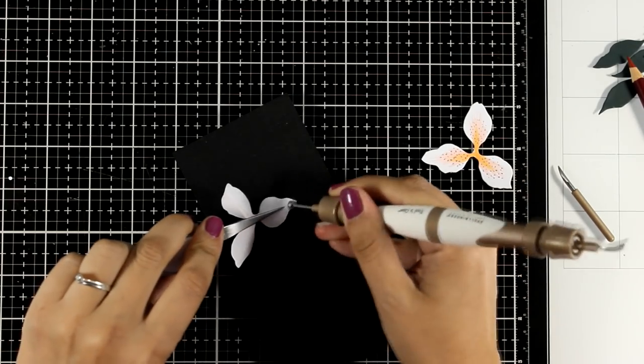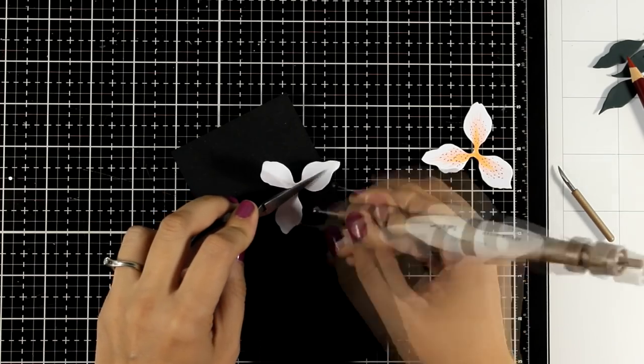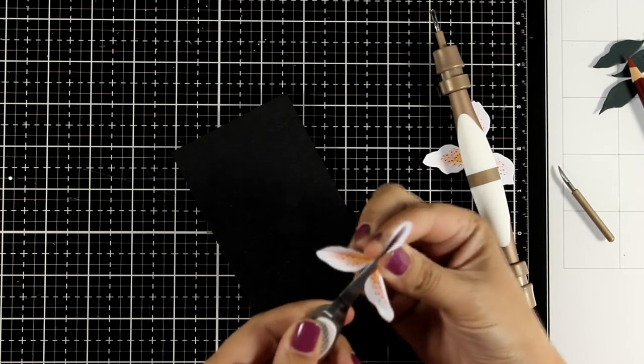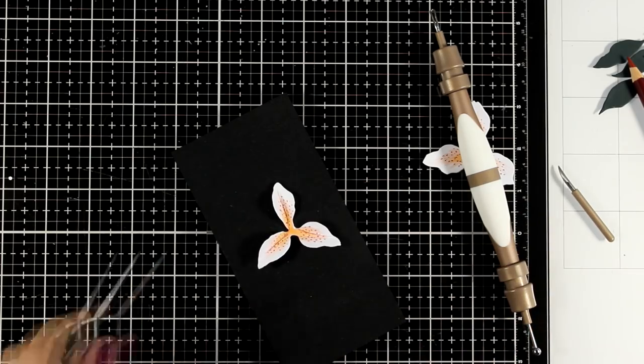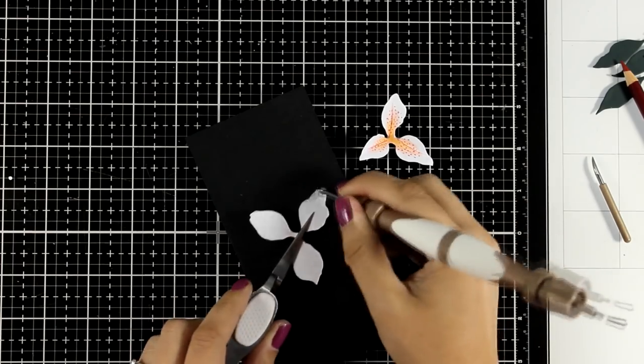If you go to the Spellbinders website and look for the collection which is called Susan's Garden you will find an amazing collection of three dimensional flowers. Others of them take more time to put together. This is one of the easiest ones since it only has six petals.